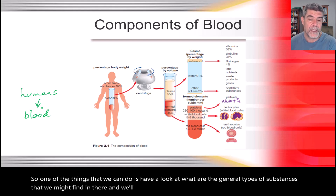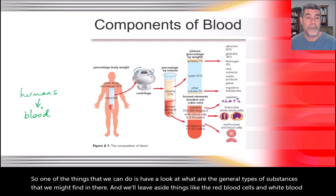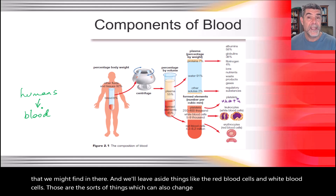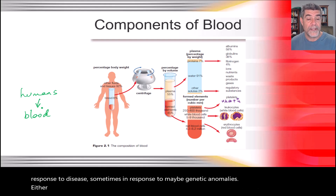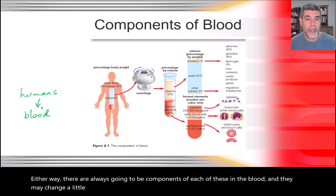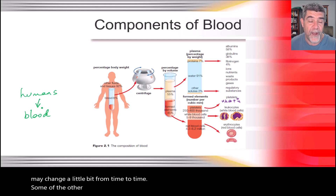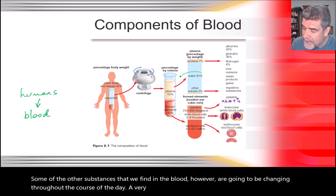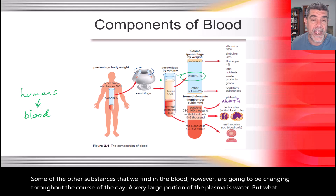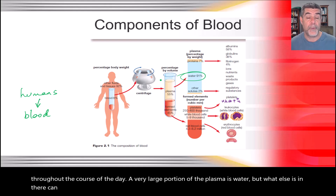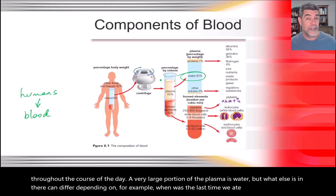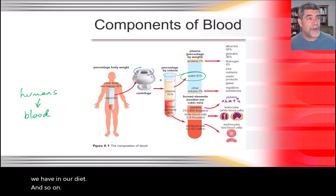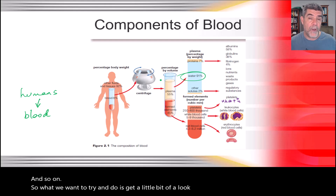We'll leave aside things like the red blood cells and the white blood cells — those components can also change from time to time, sometimes in response to disease. Some of the other substances we find in the blood are going to be changing throughout the course of the day. A very large portion of the plasma is water, but what else is in there can differ depending on, for example, when we last ate or what we have in our diet. We want to look at how the composition of blood changes as it moves through different organs.